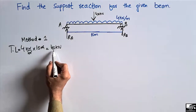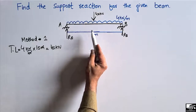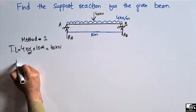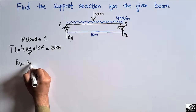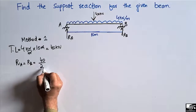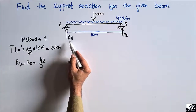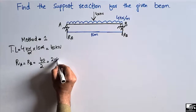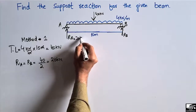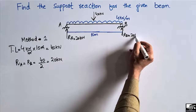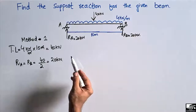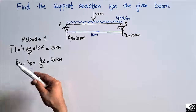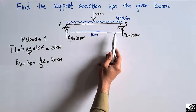Now, since we have 40 kilonewton acting at the center of the beam, half the load will be taken by support A and half by support B. So RA and RB are each equal to 40 divided by 2, because each support takes half of the total load. 40 ÷ 2 = 20 kilonewton. So RA = 20 kilonewton and RB = 20 kilonewton. This is the first method for finding support reactions for a simply supported beam with a distributed load.